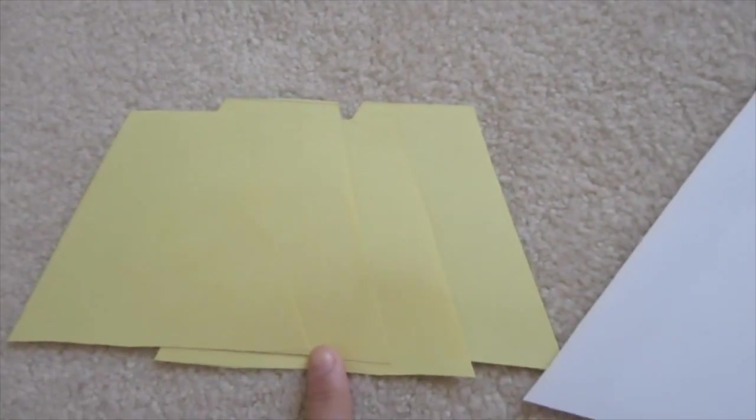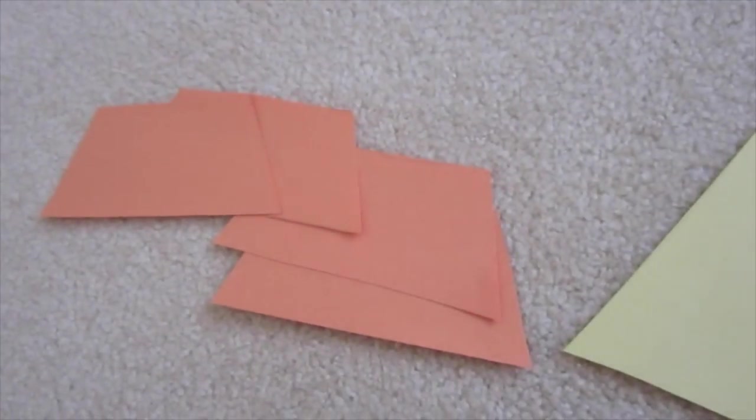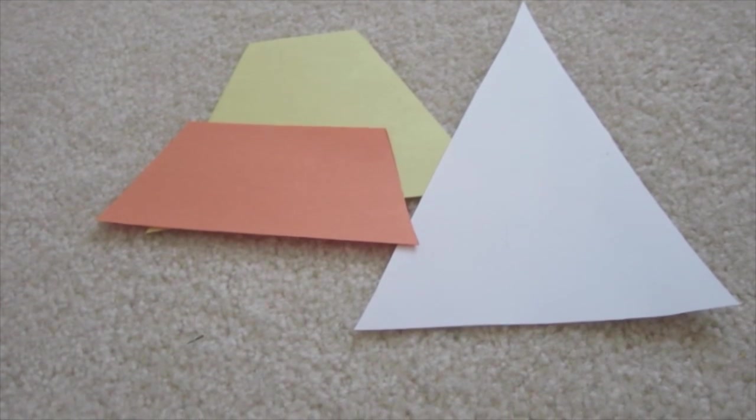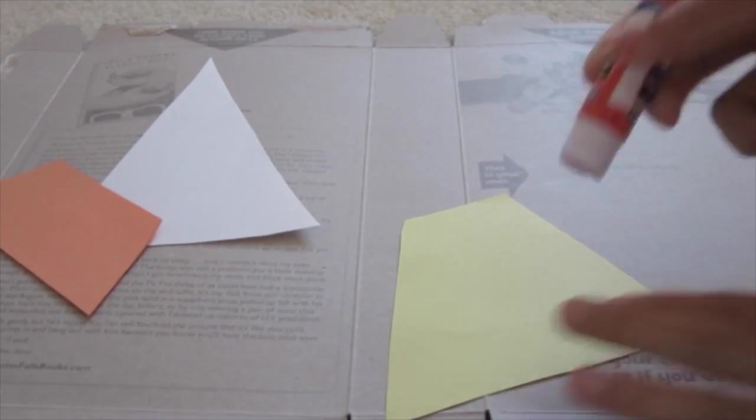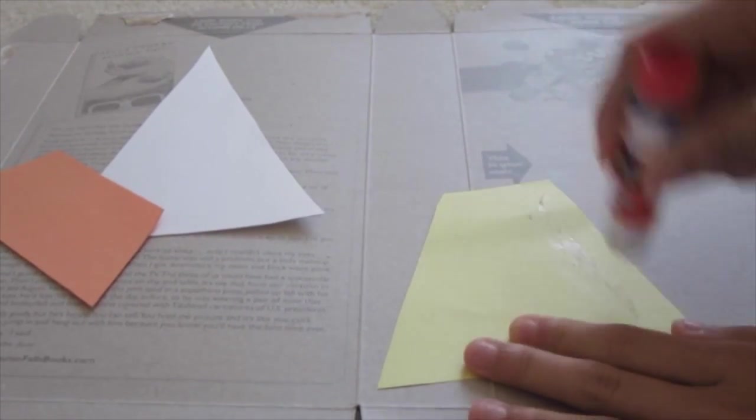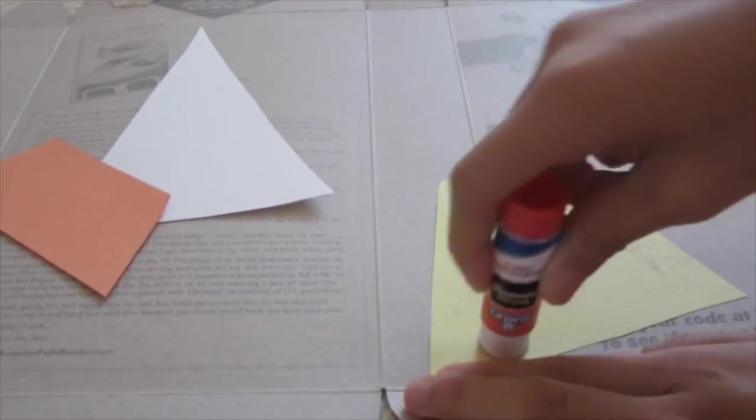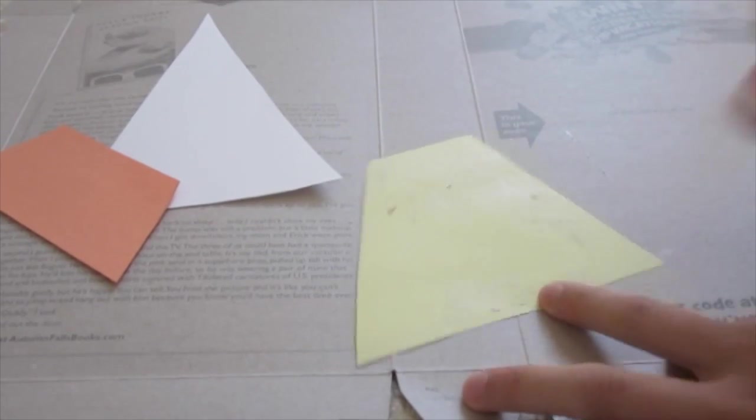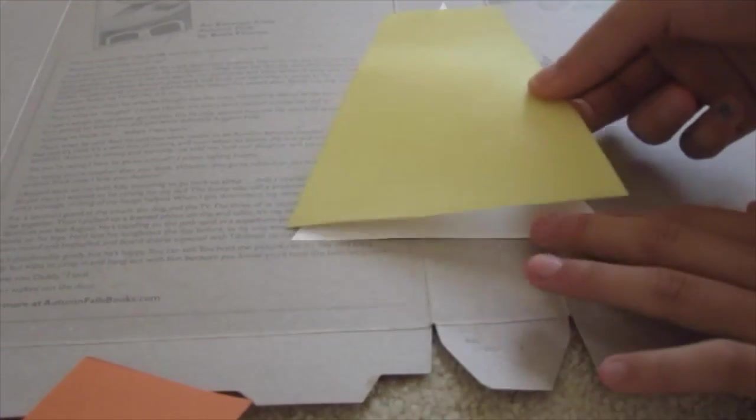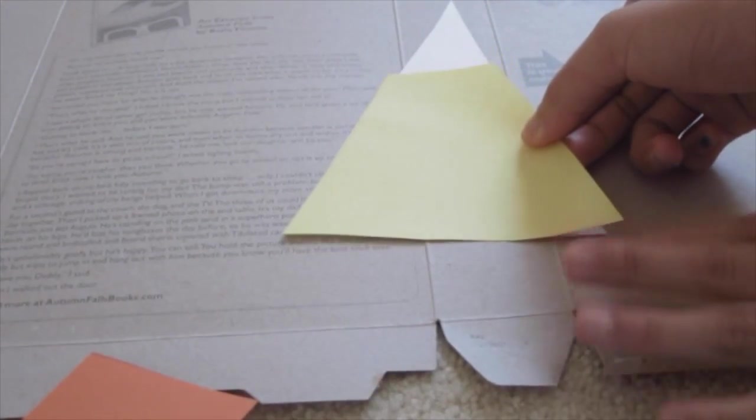For each, I cut out four of them - four white, four yellow, and four orange. Now you want to start gluing each one on. First, apply glue on the yellow one because you want to glue the yellow one onto the white one.